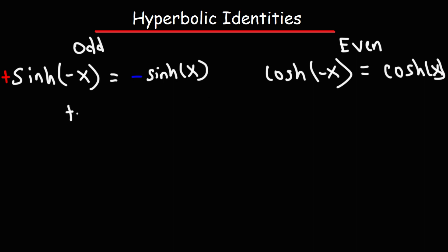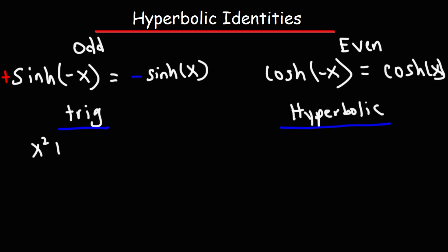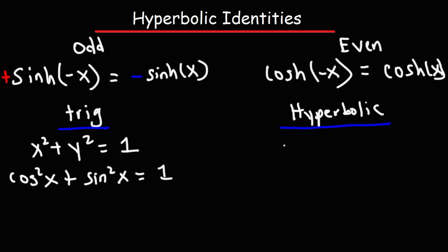Now let's focus on the Pythagorean identities and make a comparison between the trigonometric functions and the hyperbolic functions. The trigonometric functions are associated with the unit circle, which has the equation x² + y² = 1. For the Pythagorean identities related to the unit circle, cosine squared plus sine squared equals one. For the hyperbolic functions, we have the equation of a hyperbola opening in a horizontal direction: x² minus y² equals one.